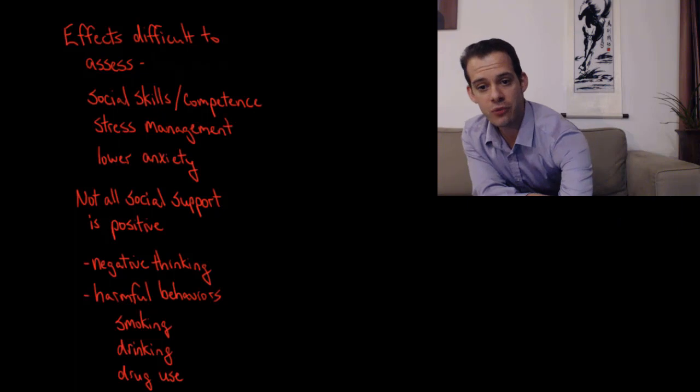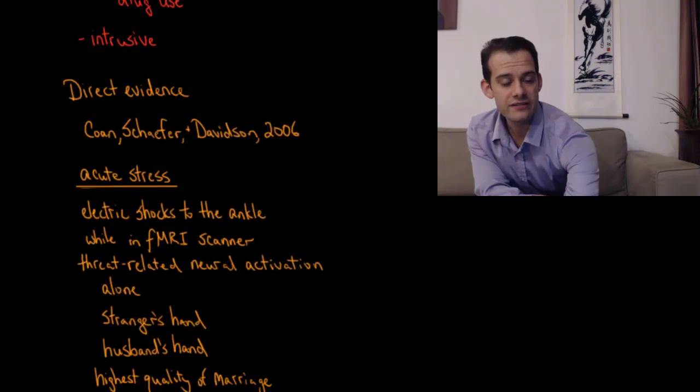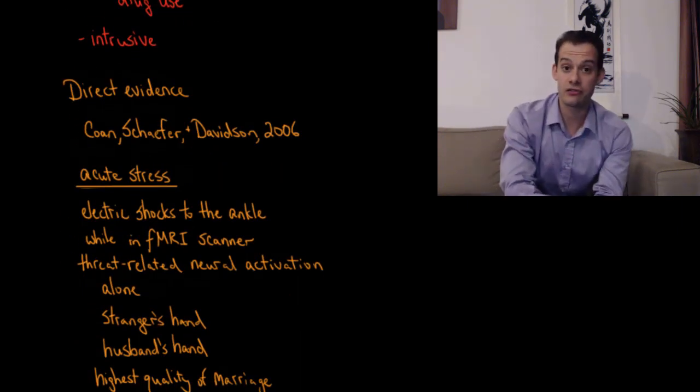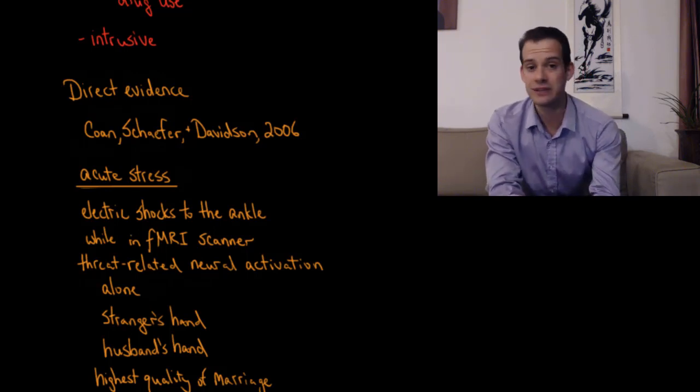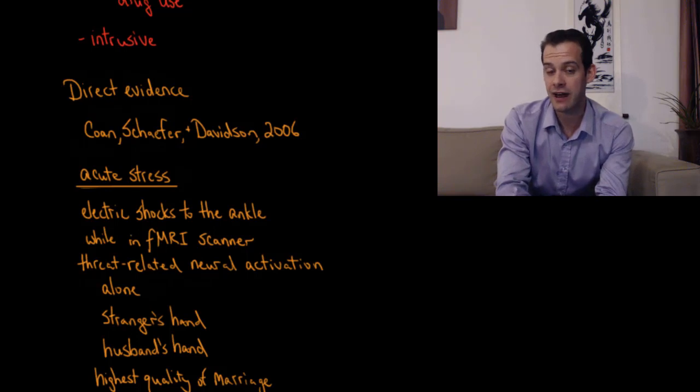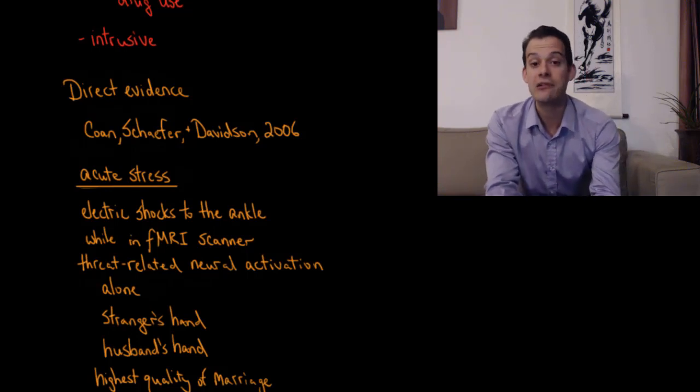And we can also have the problem that social support can be intrusive. So sometimes it might increase our stress. So somebody might think that they're providing support to us but they might actually be intruding. They might be violating our privacy. They might be asking us things that we don't really want to tell them. It's not really any of their business. And so they might think they're providing social support but actually they're increasing the stress that the person is experiencing.